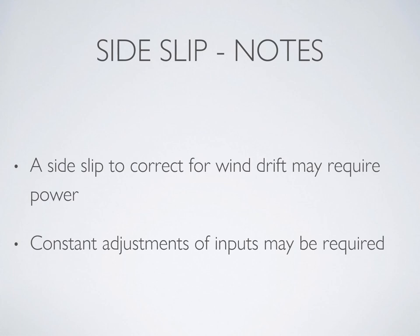Unlike a forward slip, the side slip will have inputs that are adjusted to the situation or the intensity of the wind. In the event of gusty wind, you'll probably need to continually adjust your inputs all the way down to the ground.